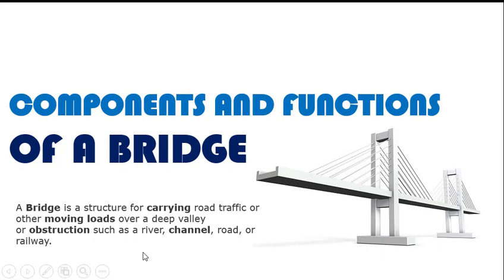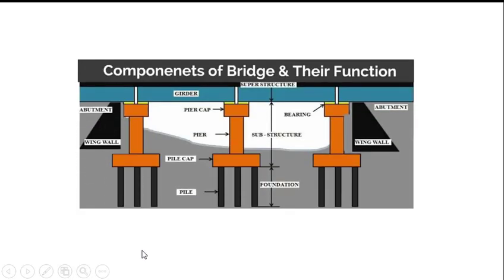As you can see in this image, there are various components of a bridge such as abutment, wing walls, girder, piers, pile, pile cap, foundation, and bearings. Before discussing the functions of each component, we need to know that the bridge is divided into three major parts: the first is called superstructure, the second is substructure, and the third major part is called adjoining structures.